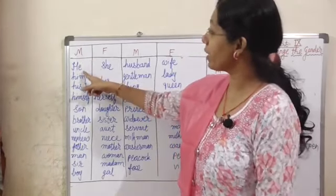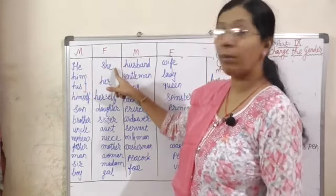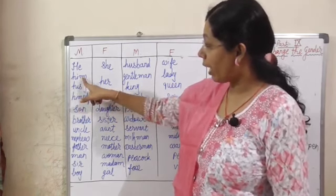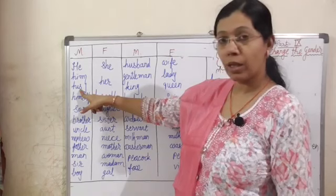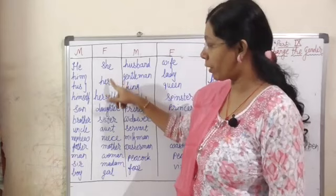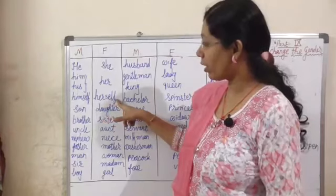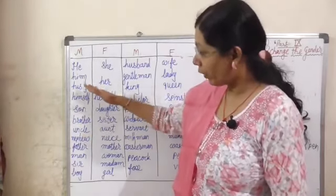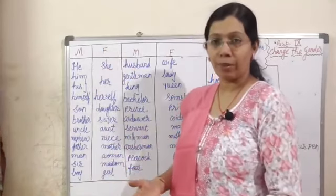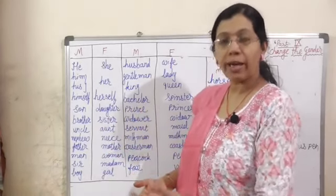Now, in masculine gender, the pronouns are He, Him, and His. In feminine gender, the corresponding form is She, Her, and Her. Himself in masculine gender becomes Herself in feminine gender. Now we will see how these are identified by which nouns.